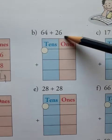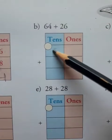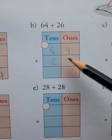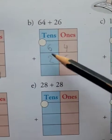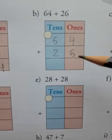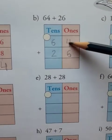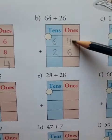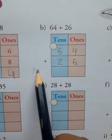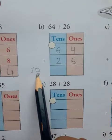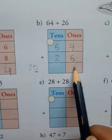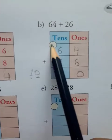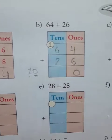Next: 64 plus 26. First of all, you arrange the numbers: 64 and 26. Now, first of all, you add the ones: 4 plus 6 is equal to 10. So how do you write 10? You can see 1 and 0 — 0 is in the ones place, so you write 0. And this 1 you carry over to the tens place.